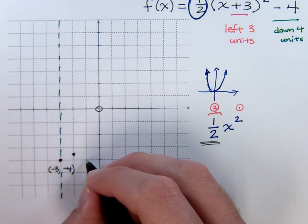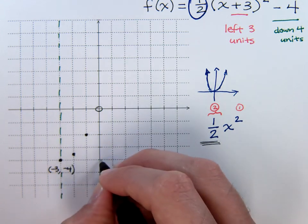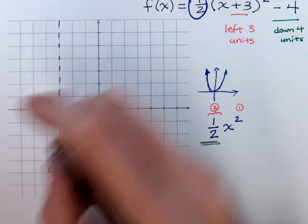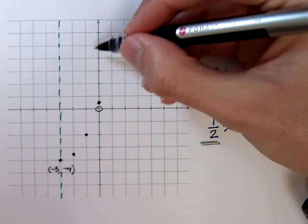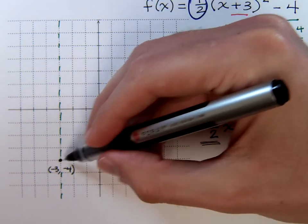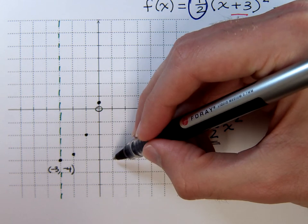Again, two squared would be four, but then half of four is two. Three squared is nine, half of nine is four and a half. So, you see, we're not going up nine anymore, we're only going up half of that, so four and a half. Four squared would be sixteen, and half of sixteen would be eight.